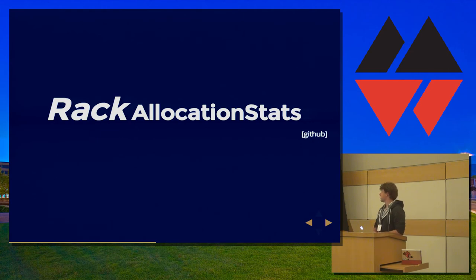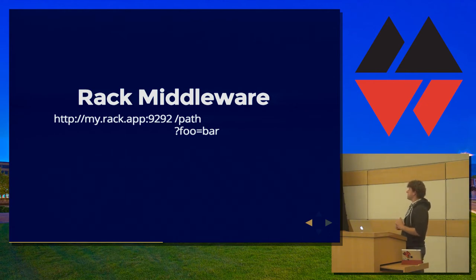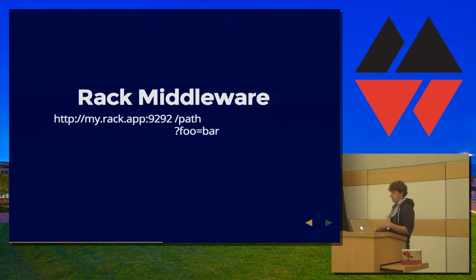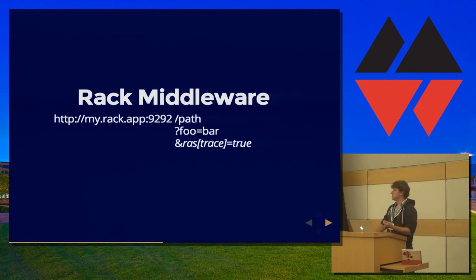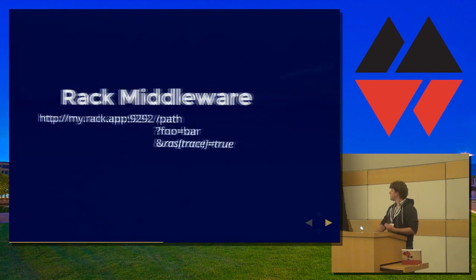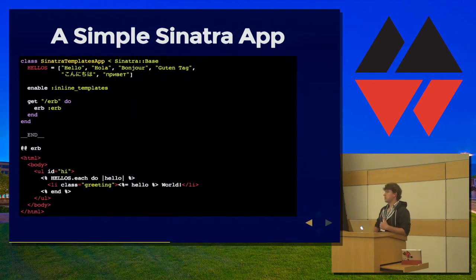We also have rack-allocation-stats, another excellent tool — it's a Rack middleware. If you have a Rack app that responds to requests, you can add 'ras_trace=true' as a parameter. RAS stands for Rack Allocation Stats. Then instead of sending back the response you were expecting, it's going to give you the top allocation sites. Let's look at an example — a super simple Sinatra app that responds to one path at /erb. It parses some ERB and says hello world in six languages.